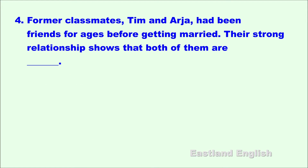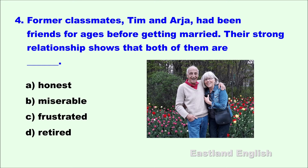Number four. Former classmates Tim and Aria have been friends for ages before getting married. Their strong relationship shows that both of them are blank. A. Honest. B. Miserable. C. Frustrated. D. Retired.